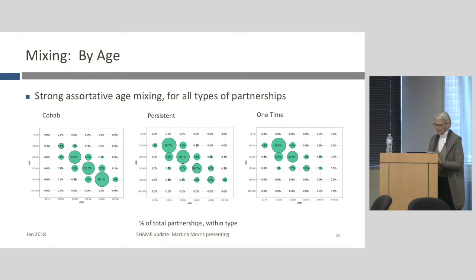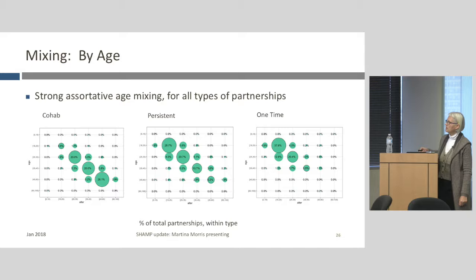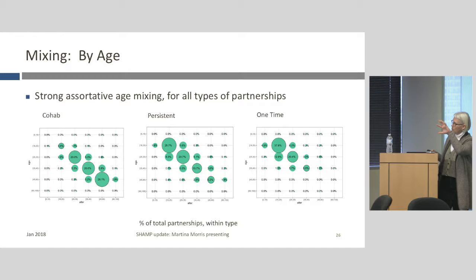Turning to mixing effects: mixing by age is fairly strong and strongly assortative for all types of partnerships. Looking at ego by alter age matrices within each partnership type, most partnerships fall along the diagonal. For cohabiting partnerships, since most are among older people, the density is in the lower part of the diagonal. For persistent and one-time partnerships, there's still very high assortative mixing, but those partnerships tend to happen among younger people.